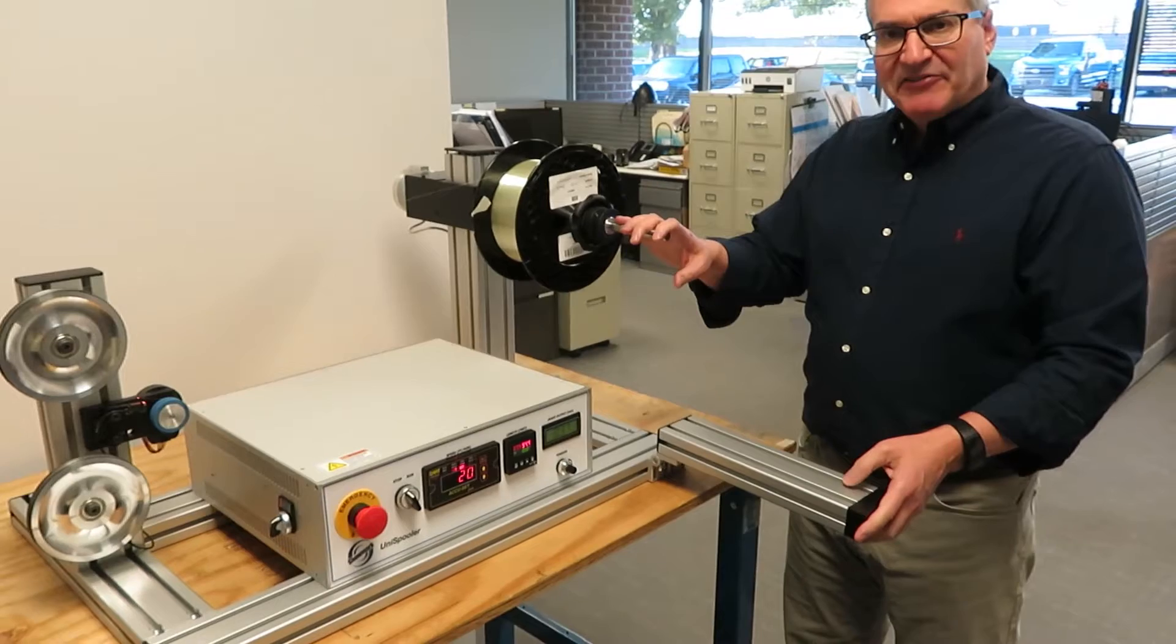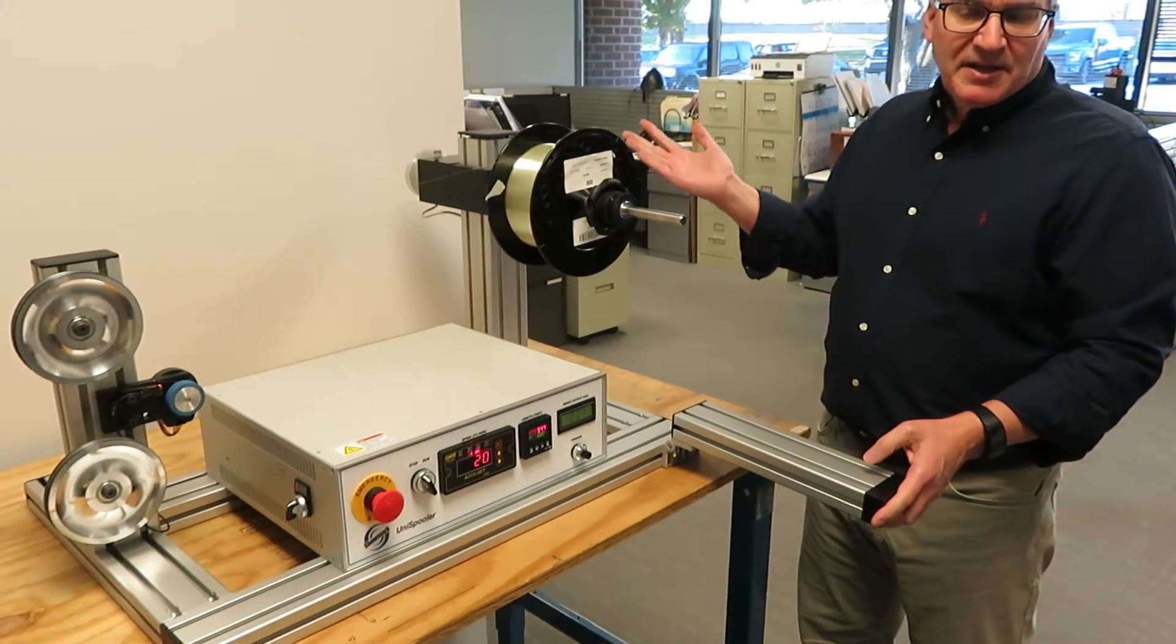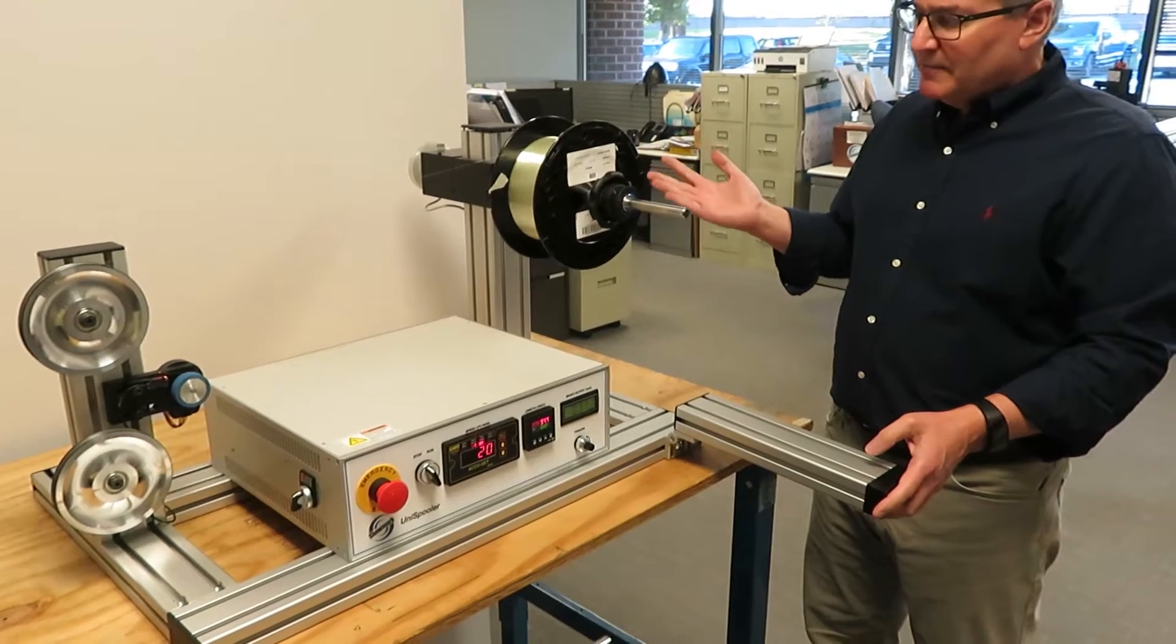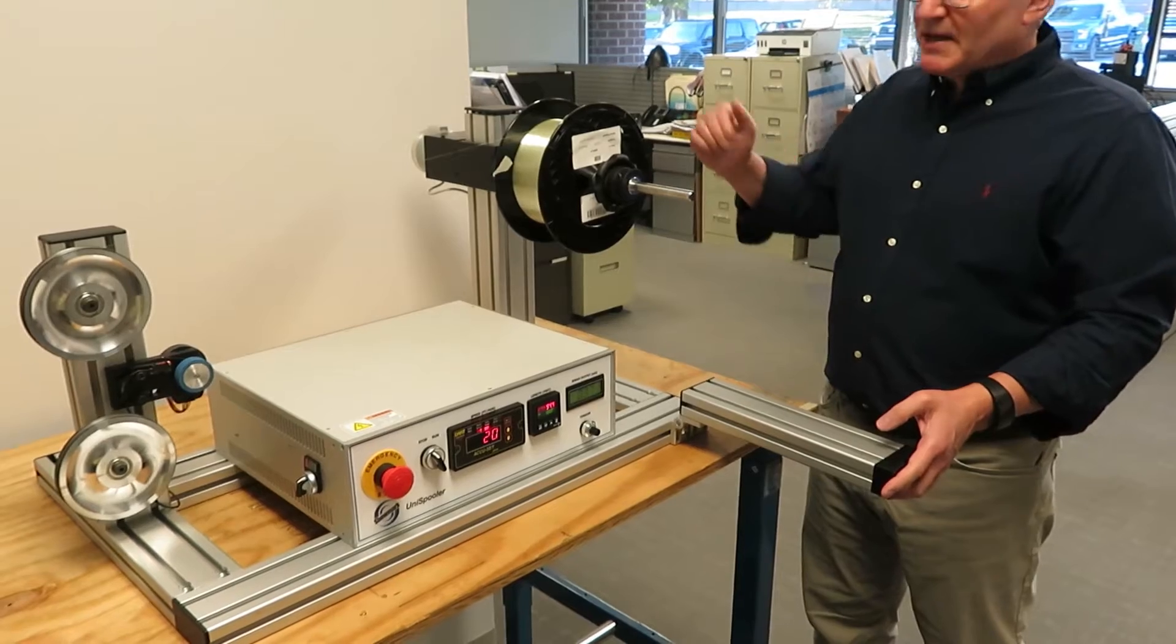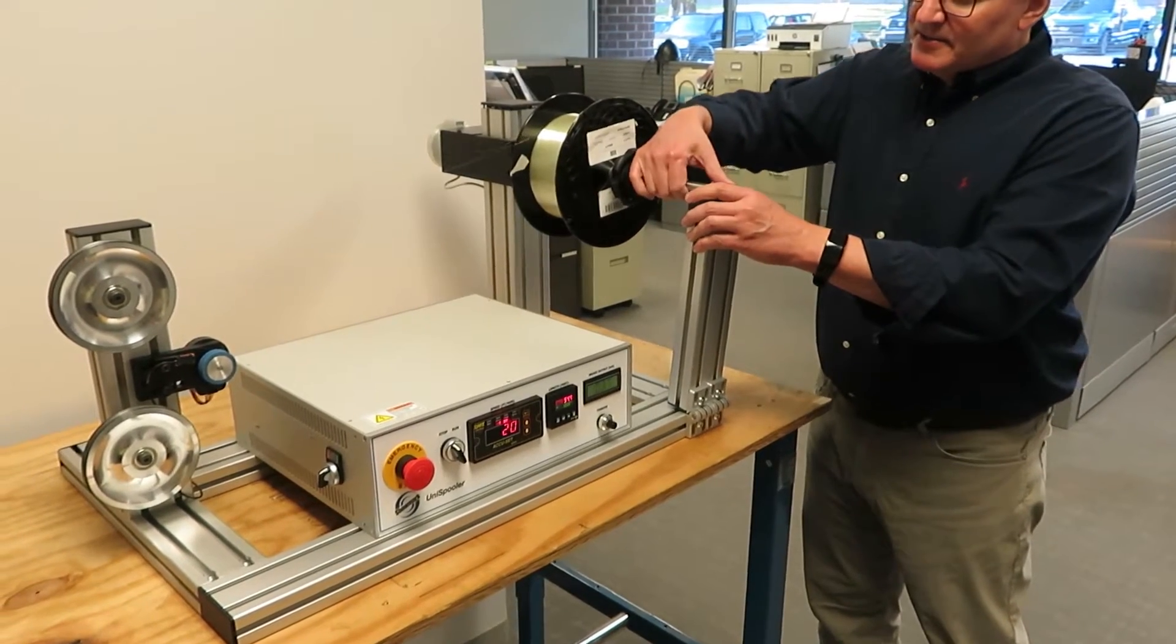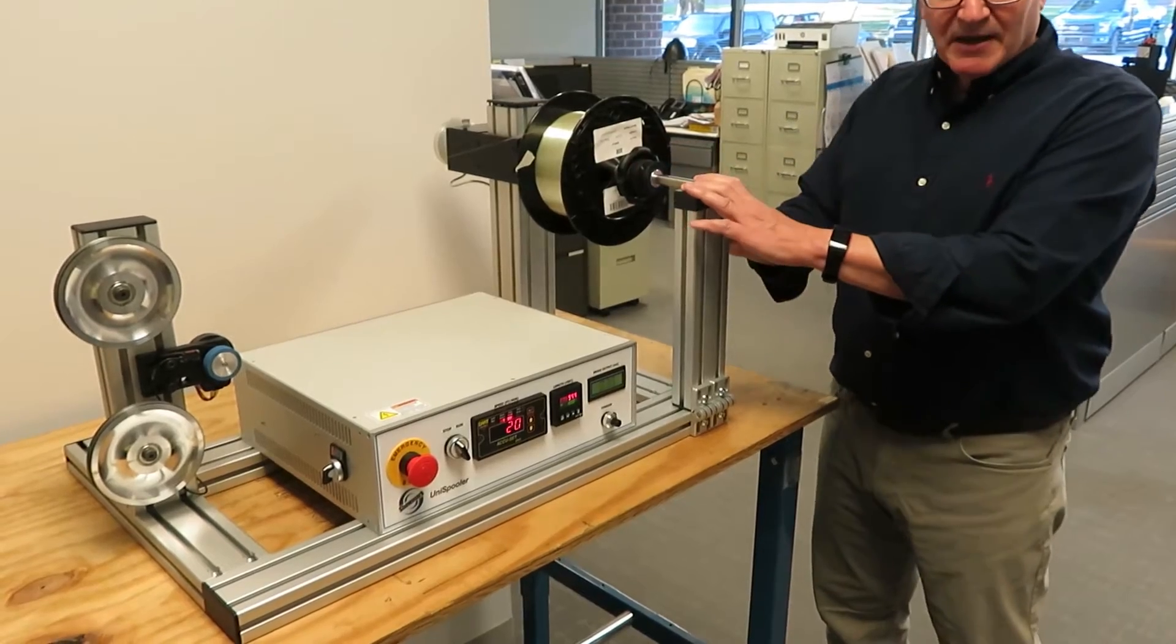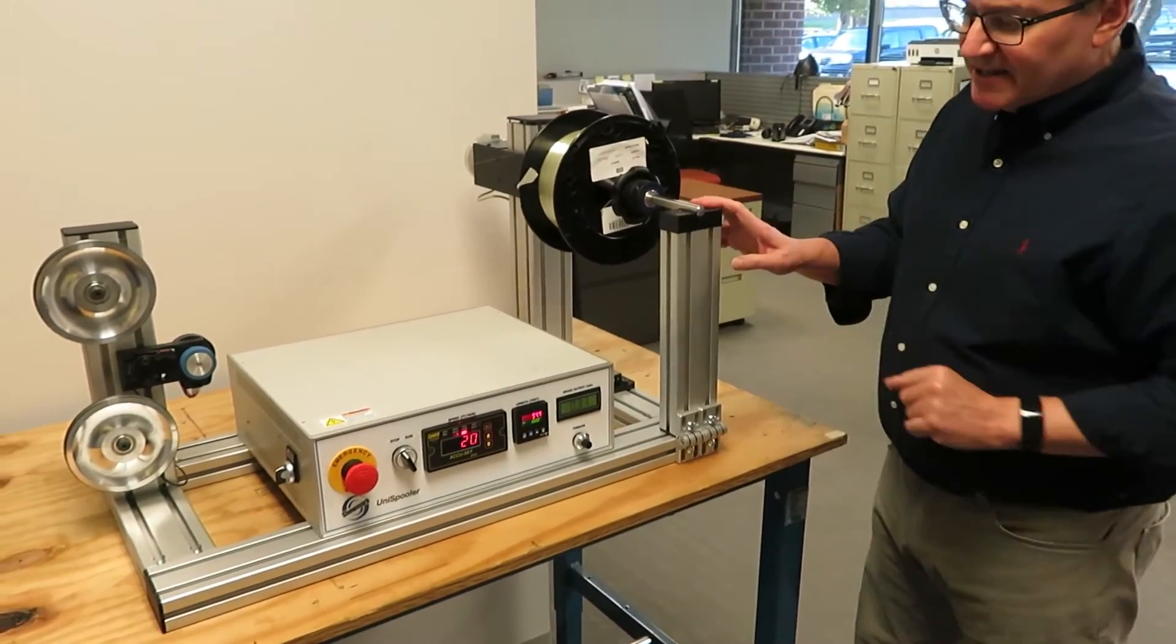These are 15mm shafts on this machine which we normally spec for about a 15lb load, maybe 20lb if it's a narrow spool that can be mounted close to the bearing. But with the tailstock, you can put about a 50lb spool on there. So we've got that on both the payoff and the take-up sides of the machine.